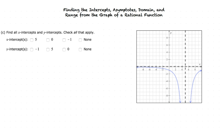Let's move on to part C, which asks us to find the x and y-intercepts. An intercept is where the graph crosses the axis. The graph gets really close to the x-axis but never crosses it, so there is no x-intercept. The graph does cross the y-axis at y equals negative 1, so the y-intercept is y equals negative 1.